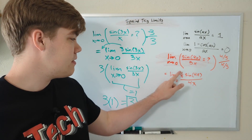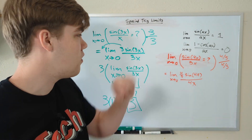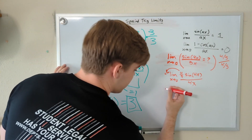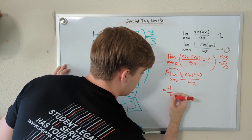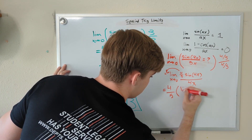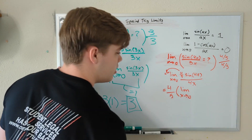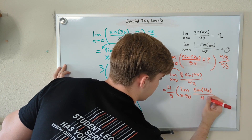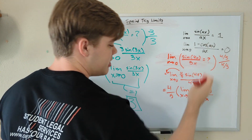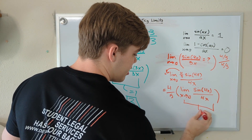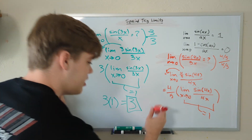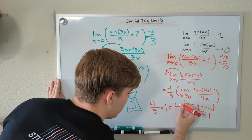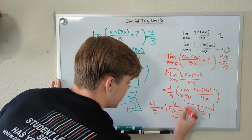Now we're getting somewhere, but we still have the four-fifths in front preventing us from being directly in the target form. Just like the last problem, we can pull this scalar out to the front using our property of limits. So our function is now four-fifths times the limit as x approaches zero of sine(4x) divided by 4x. Since we're in the sine(ax)/ax form, this inside limit equals one, making the whole problem four-fifths times one, which equals four-fifths. That is the limit.